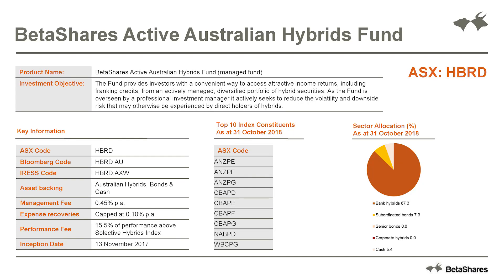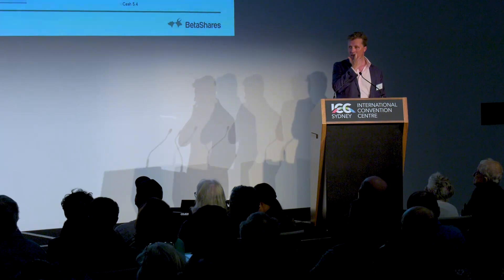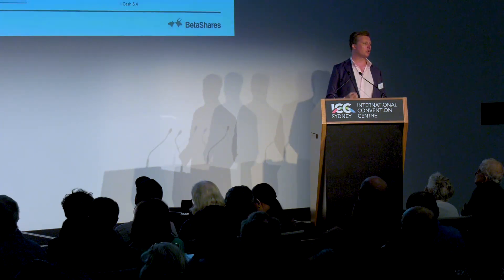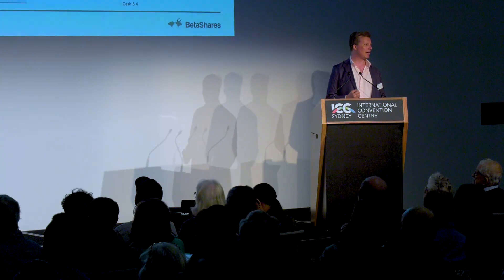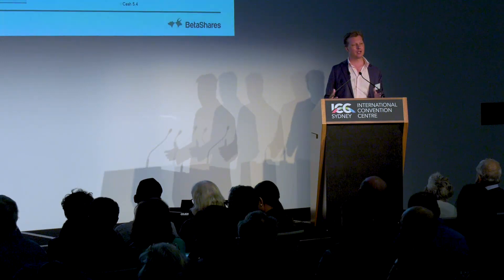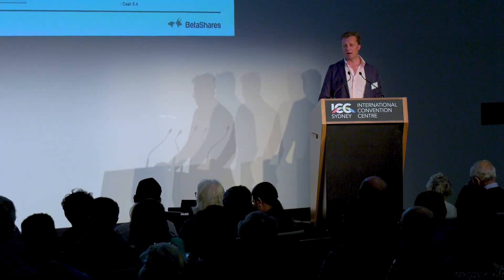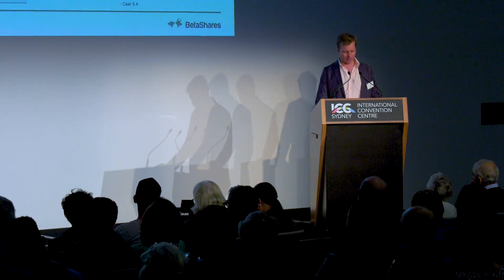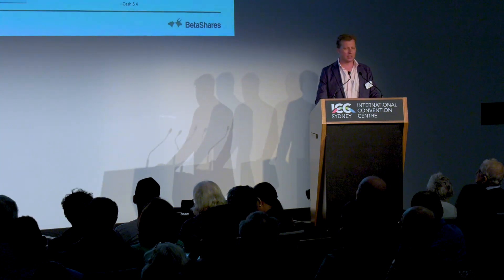The issuance terms from hybrids vary greatly from one security to another and are highly complex — there are all sorts of different scenarios under which they may or may not be converted to equity and various triggers, making them quite complex securities for an individual investor to manage. Putting that complexity into the hands of an active manager can help make hybrid securities a much simpler investment for a retail investor, and this can now be bought in one trade on the ASX under ticker HBRD.